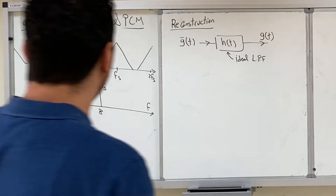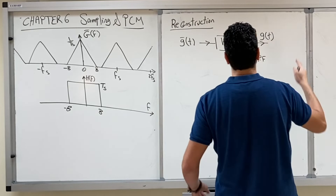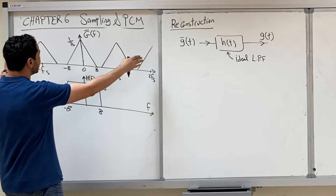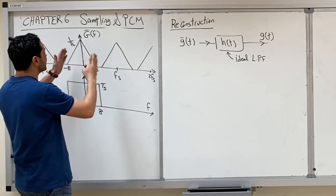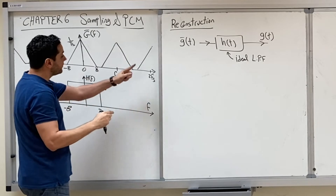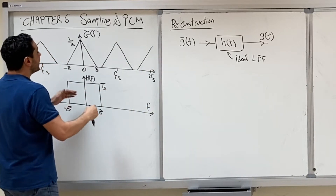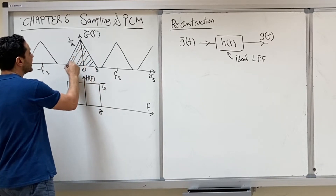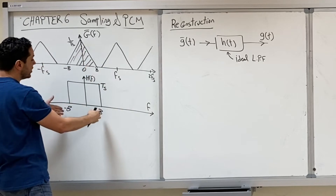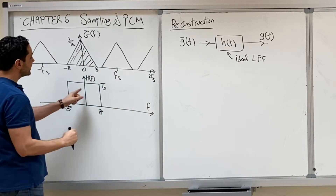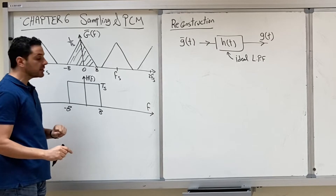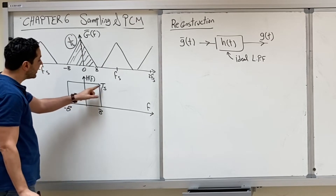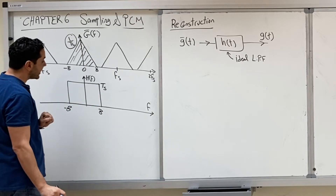In the previous video we saw that in order to reconstruct our original signal from the sampled signal, you need to pass it through a low-pass filter. If you sample the signal, the spectrum is going to repeat every FS from minus infinity to infinity. To reconstruct the original signal you pass the sampled signal through a low-pass filter existing from minus B to B hertz, and to cancel the constant 1 over TS that appears due to sampling, the amplitude of the filter must be exactly TS.